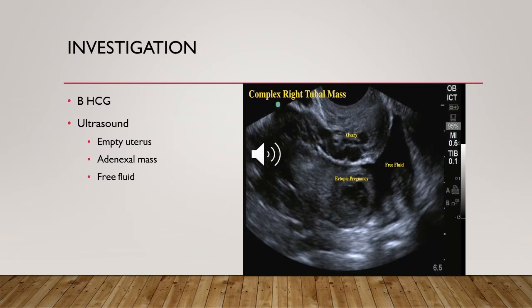Investigations: first is pregnancy test — serum beta-hCG. Ultrasound has a cut-off value: for transvaginal ultrasound scan it is between 800 and 1000, and for transabdominal ultrasound scan it is between 1000 and 1500. Ultrasound features include empty uterus, adnexal mass moving separate to the ovary, containing a gestational sac which can contain a yolk sac or fetal pole, or a complex inhomogeneous adnexal mass moving separate to the ovary, or a pseudosac in the uterine cavity, with moderate to large free fluid in the peritoneal cavity or pouch of Douglas representing hemoperitoneum.